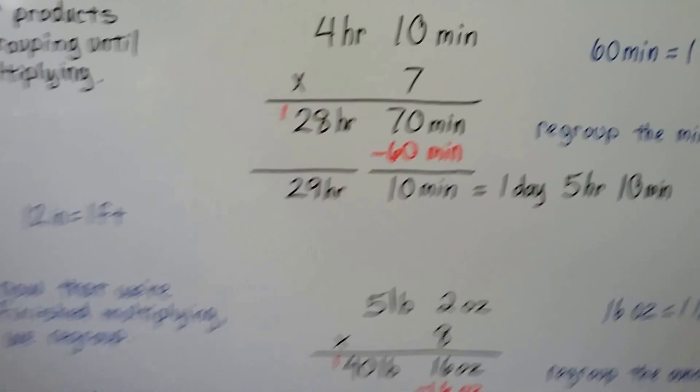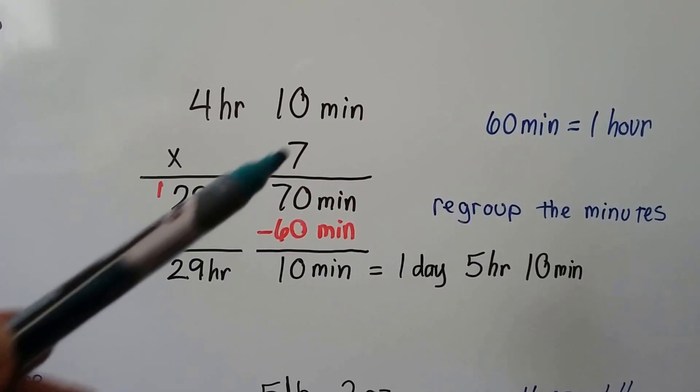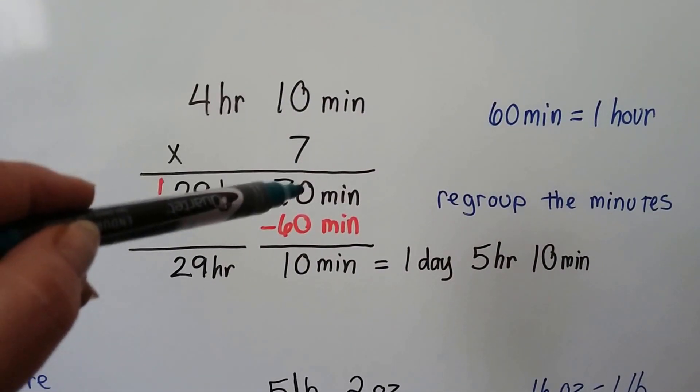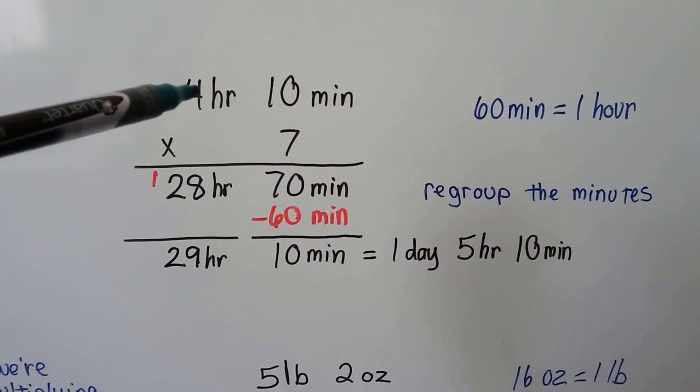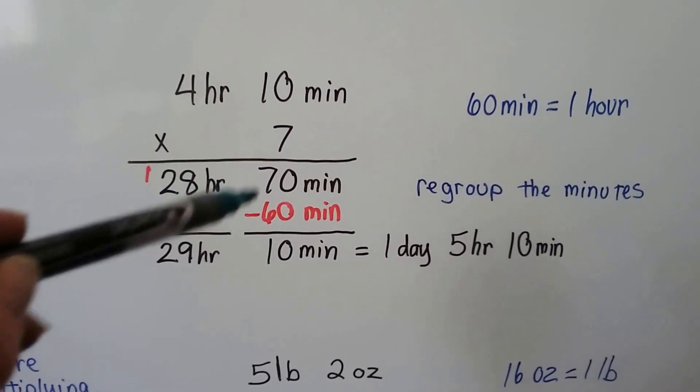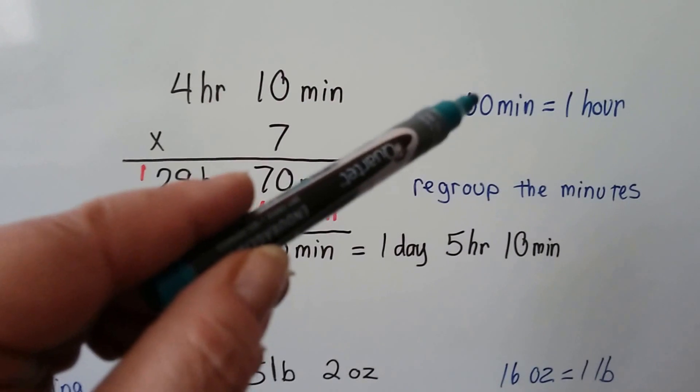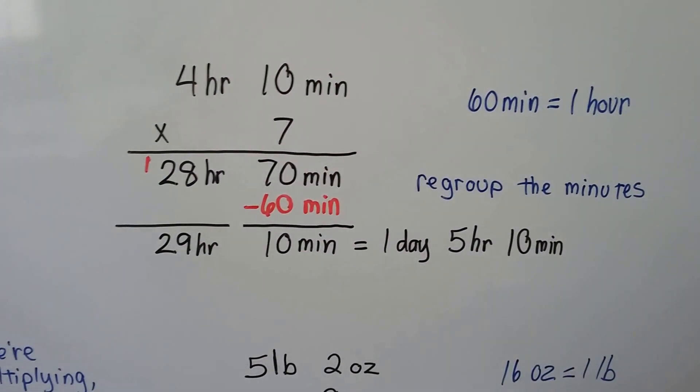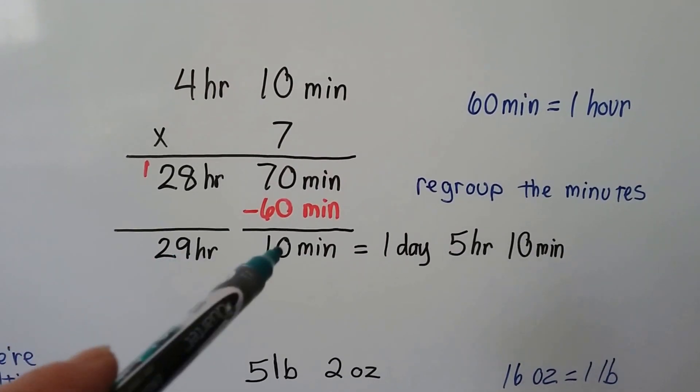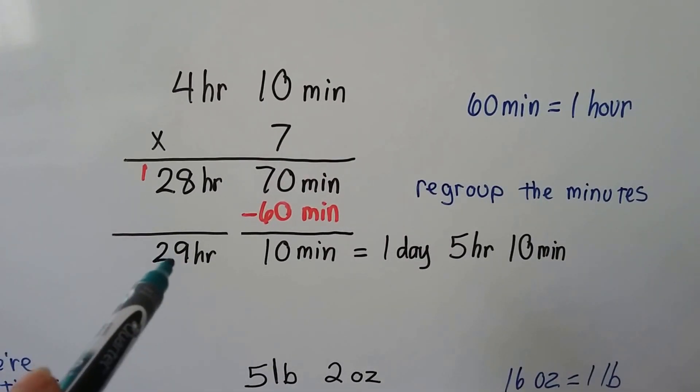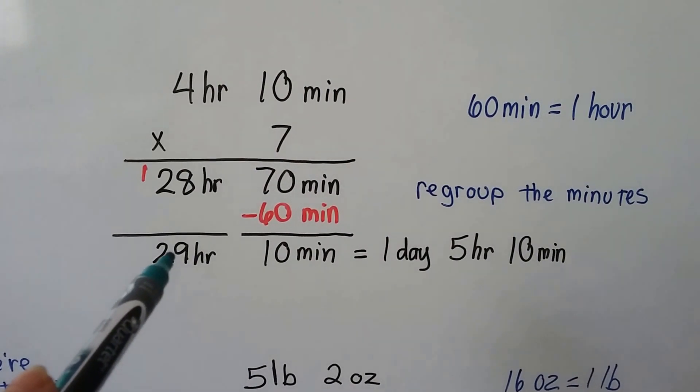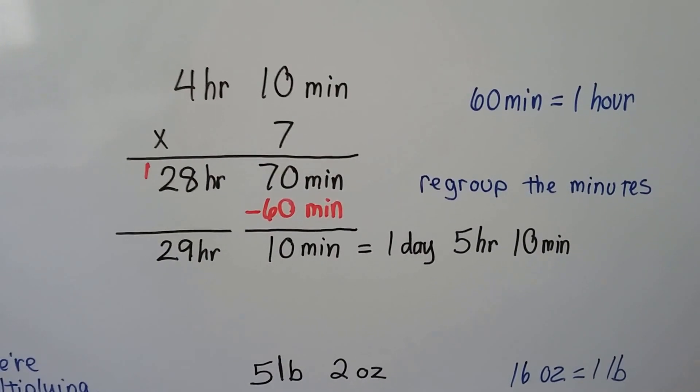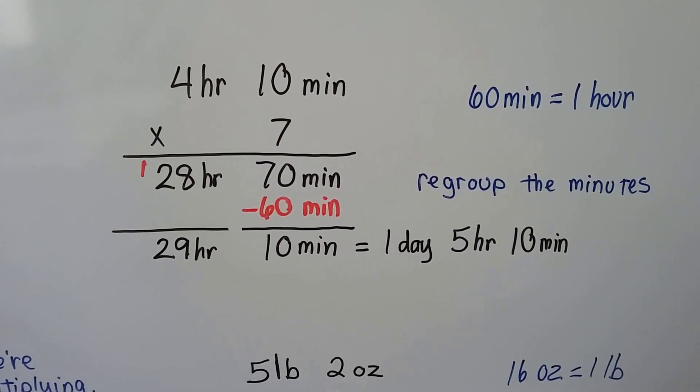Let's try it again with time. We have 4 hours and 10 minutes. We want to multiply it by 7. We're not going to regroup. We're just going to do 7 times 10 is 70. Then we're going to do the hours. 7 times 4 hours is 28 hours. In 70 minutes, we know 60 minutes is an hour. We can pull out an hour as 60 minutes and give it to the 28. That's going to give us 29 hours and 10 minutes. That can also be converted into 24 hours for one day with 5 left over. So we have 1 day, 5 hours, and 10 minutes. That's if you need to really keep simplifying.